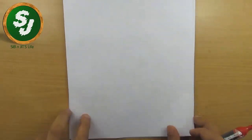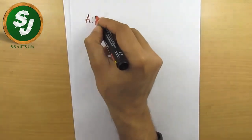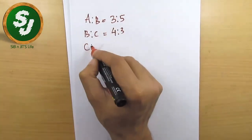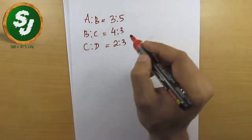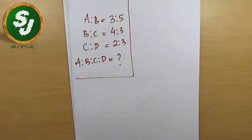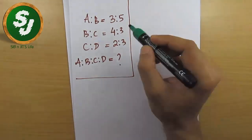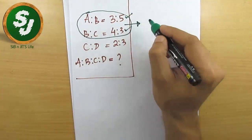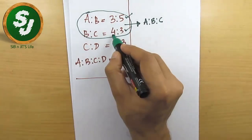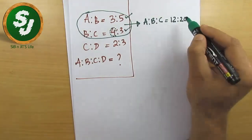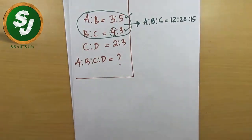Now a more complex situation: a:b = 3:5, b:c = 4:3, and c:d = 2:3. Find a:b:c:d. First, combine a:b and b:c. Take 4 and multiply: 4×3 = 12, 4×5 = 20, 3×5 = 15. So a:b:c = 12:20:15.